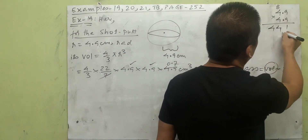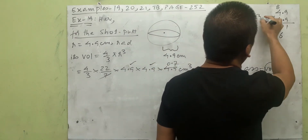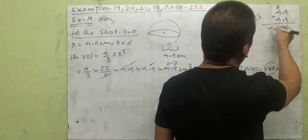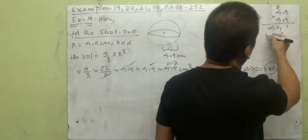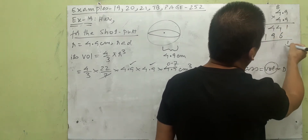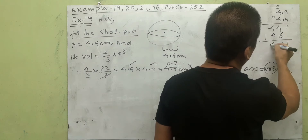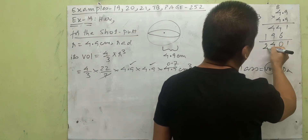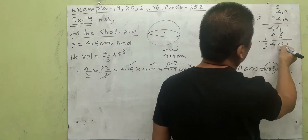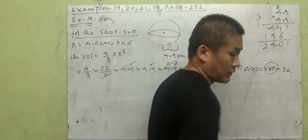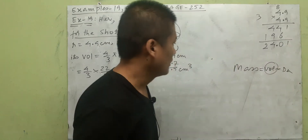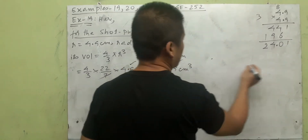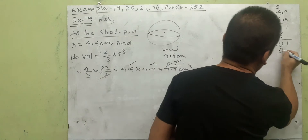Continuing the multiplication of 4.9 × 4.9: we get 24.01. Then we multiply that result by 4.9 again (the third factor of r cubed). The next step gives us the numerator for the volume expression.